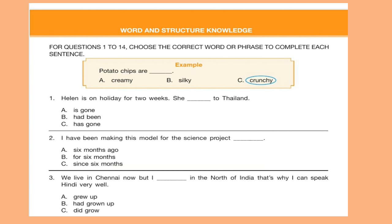Question 1: Helen is on holiday for two weeks. She dashed to Thailand. Look at the options carefully and write down your answer. Question 2: I have been making this model for the science project — dash. Question 3: We live in Chennai now, but I dash in the north of India. That's why I can speak Hindi very well.